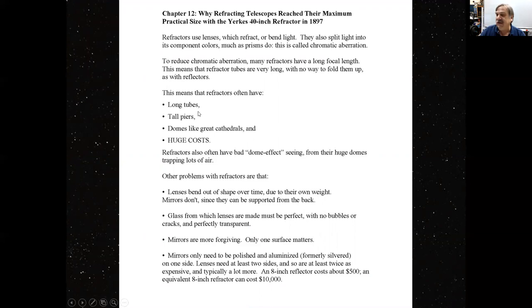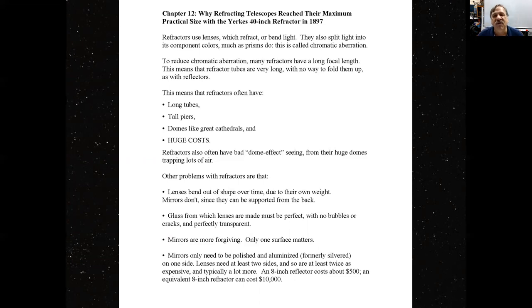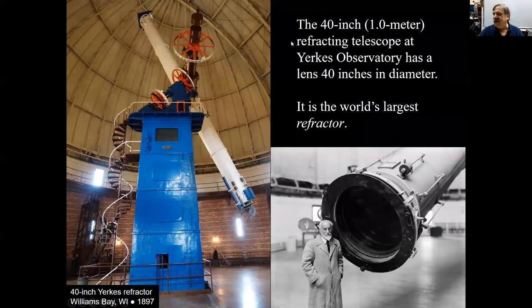Refractors, because of the color error and the need to reduce chromatic aberration, have long tubes, tall piers, domes like great cathedrals, and are very costly. An equivalent one-meter telescope using a mirror that can see just as deep into space would cost nowadays about one million dollars. The Yerkes refractor in its day cost the current equivalent of 25 million dollars.